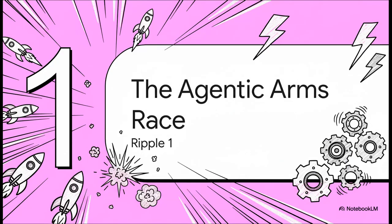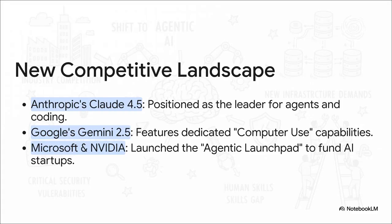I mean, it's immediate, it's intense, and all the biggest players in tech are in on it. And the speed is just incredible. The new battlefield isn't just about who's got the most creative AI. It's about who has the most capable one. You've got frontier models from Anthropic and Google going head to head on who can actually use a computer better. And at the same time, you have these giants like Microsoft and Nvidia just pouring fuel on the fire, funding startups to make this happen even faster.